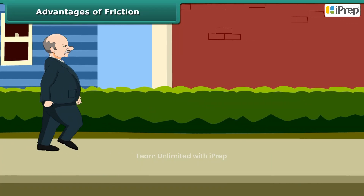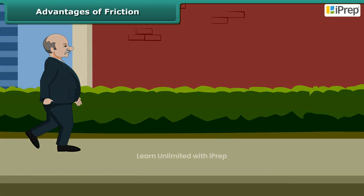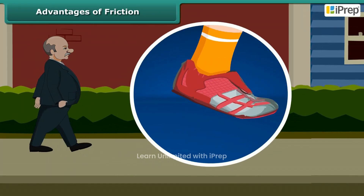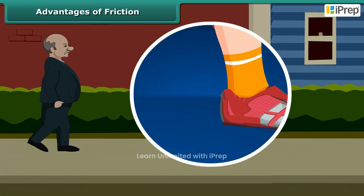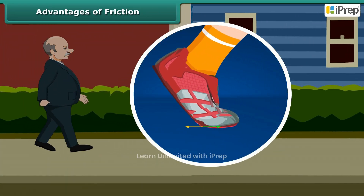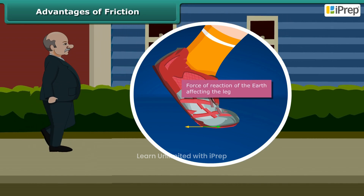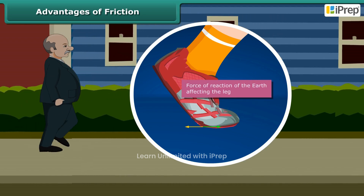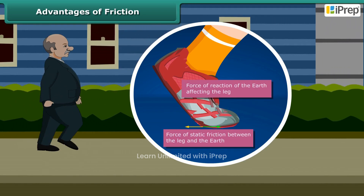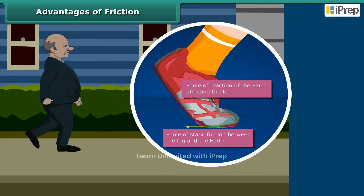Friction is both good and bad. We are able to walk because friction prevents us from slipping. When we push the ground with our foot, the friction provides a forward reaction to our push and pushes us forward.